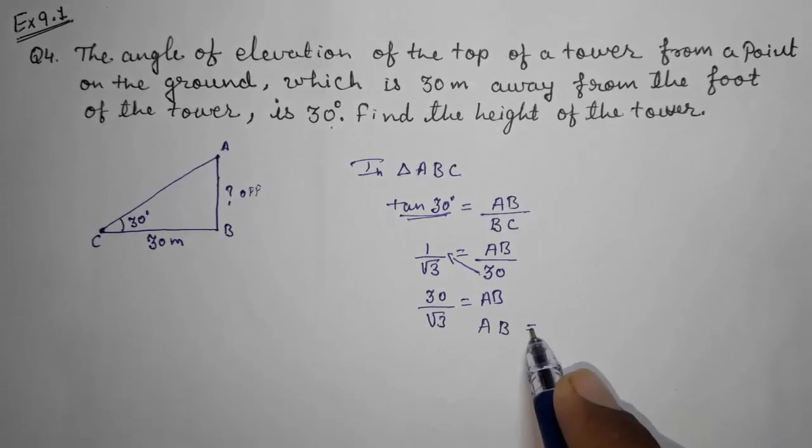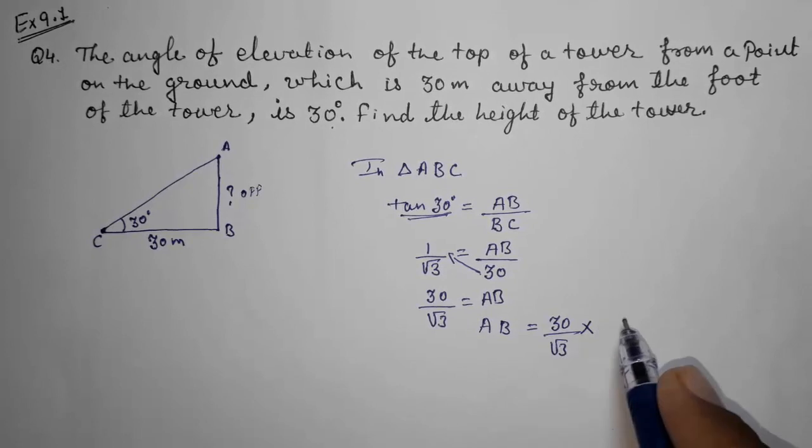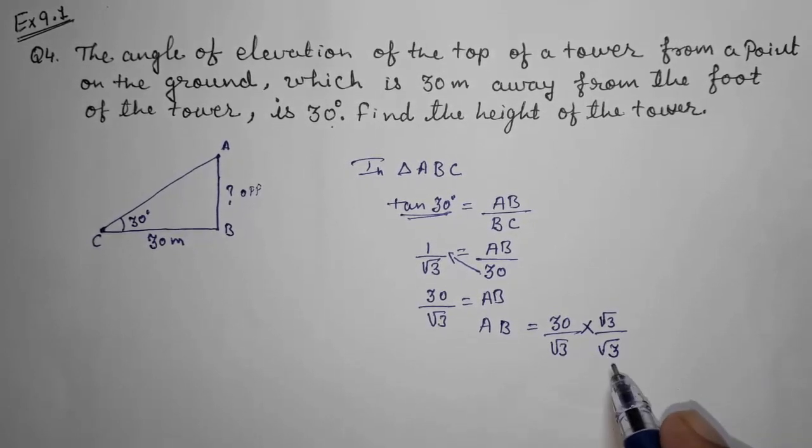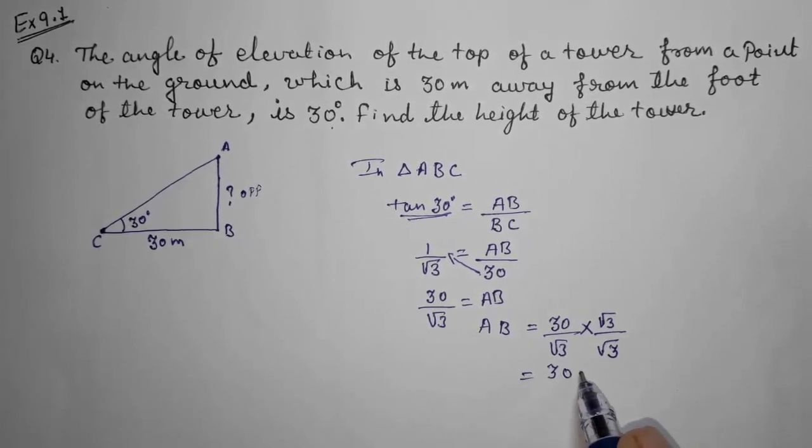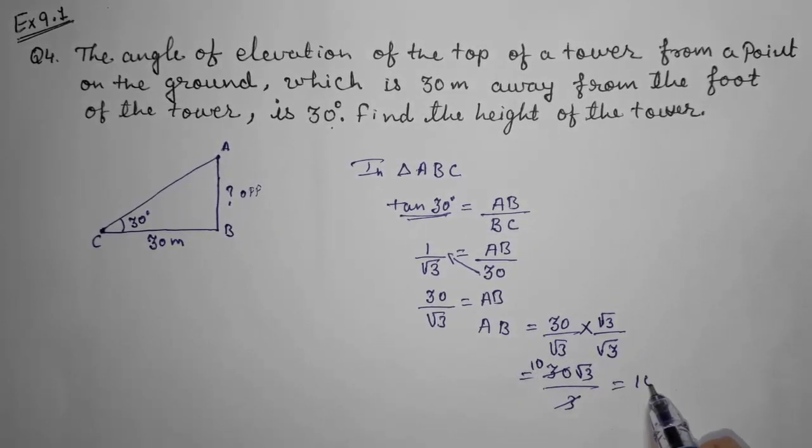What we have to do is rationalize it. How we are going to rationalize? By multiplying root 3 upon root 3. So multiplying this, what will happen? This will become 30 root 3 by 3. So 3 into 10 is 30, so your answer will be 10 root 3 meters.